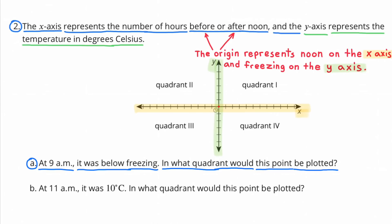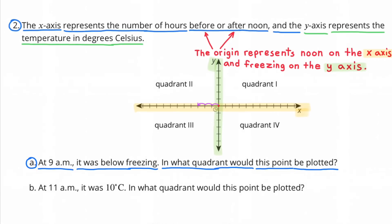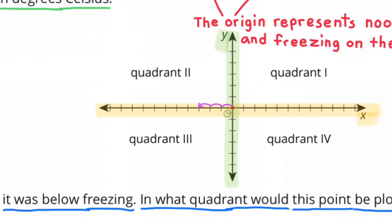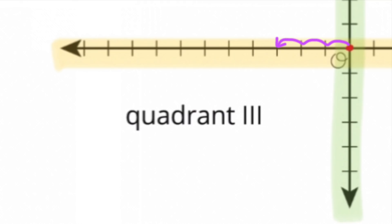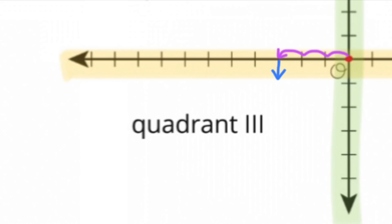A. At 9 a.m., it was below freezing. In what quadrant would this point be plotted? 9 a.m. is before noon, so we'd move to the left of the origin. Below freezing means we'd move down. That would put us in Quadrant 3.